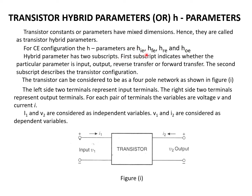In H-parameter HIE, you can see there are two subscripts: I and E. The first subscript indicates whether the particular H-parameter is input, output, reverse transfer, or forward transfer. The second subscript represents the transistor configuration.